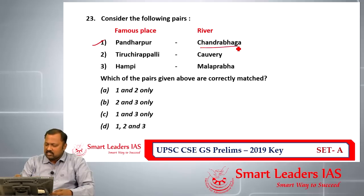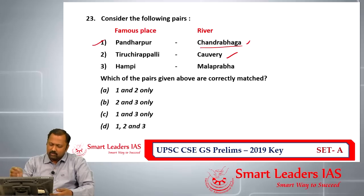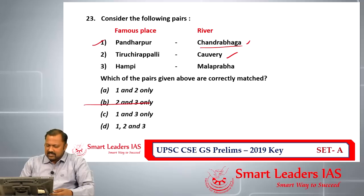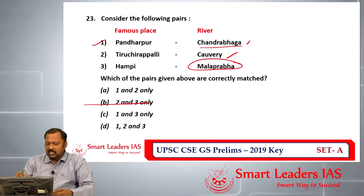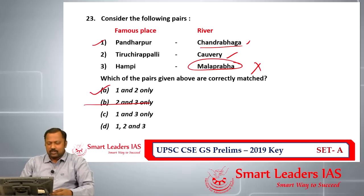Question number twenty-three is about pairs of places and rivers. Pandharpur is located on the Chandrabhaga River, also called the Bhima — statement one is correct. Tiruchirappalli is on the Cauvery — statement two is correct. Hampi, the Vijayanagara capital, is on the Tungabhadra River, not as stated in statement three, so three is wrong. The answer for question twenty-three is A.